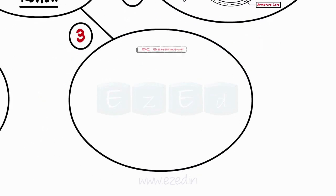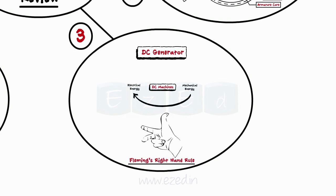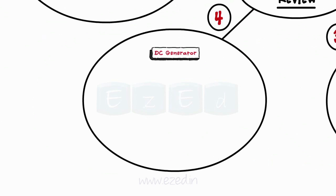The machine that converts the mechanical energy into electrical energy is called as DC generator. Fleming's right-hand rule represents the directions of the motion of conductor, magnetic field and the induced EMF. The EMF equation for the DC generator is given by Eg equals P phi N upon 60 into Z upon A.